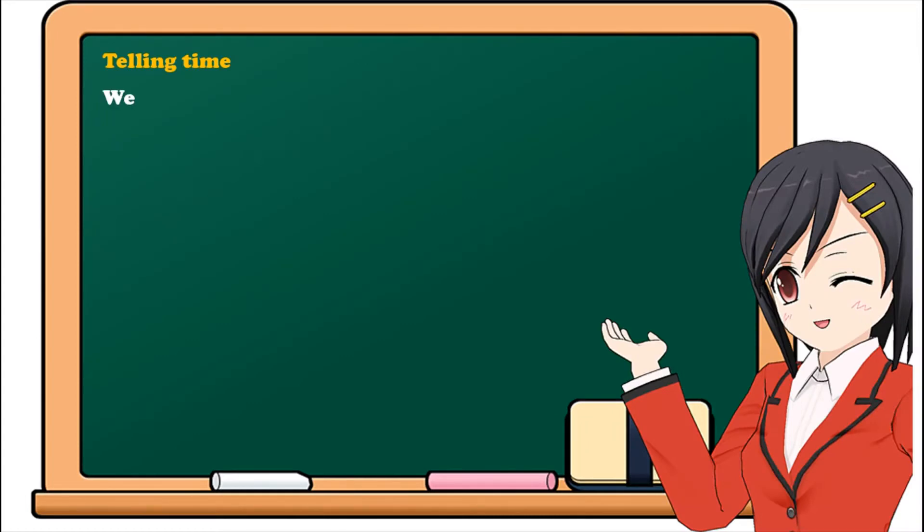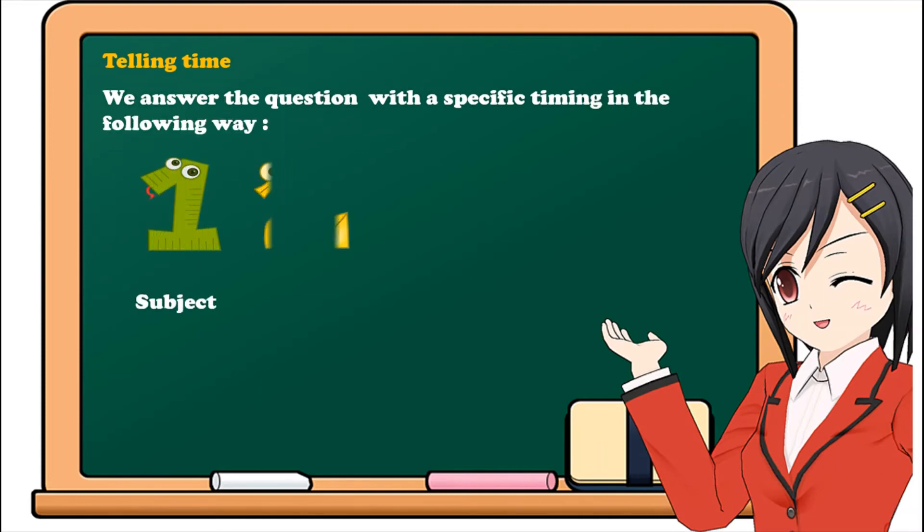Okay. Now let's see how we answer these questions. Number one: Subject. Number two: Verb. Then at. Then the time. For example.